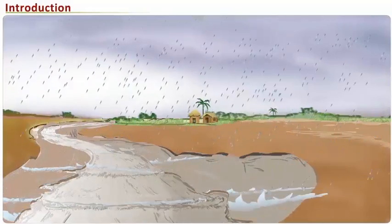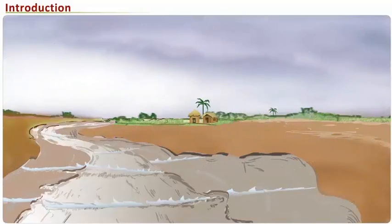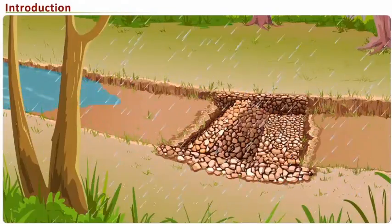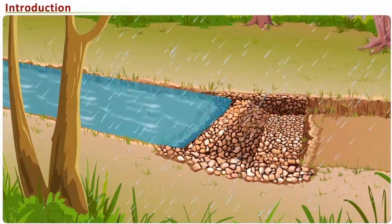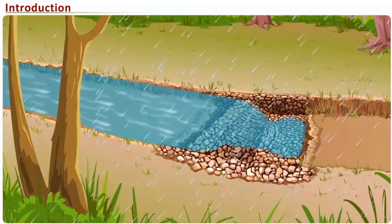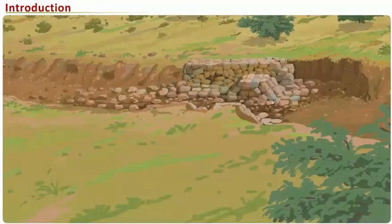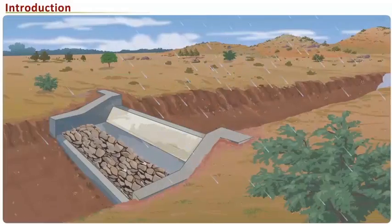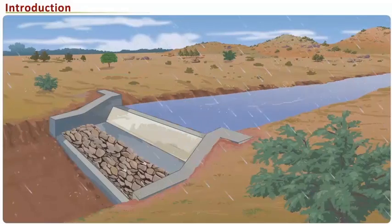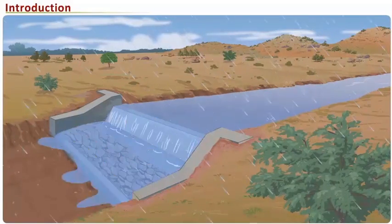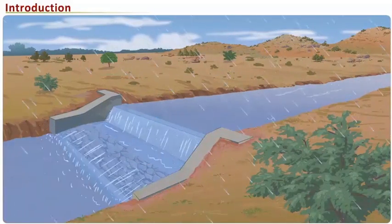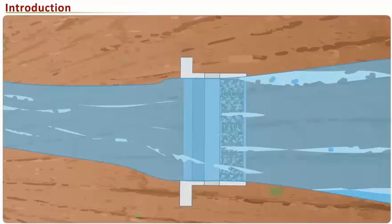Since these dams are constructed with stones, during heavy rains due to the velocity of the flow, the stones may slide off and the dam may get damaged. In such places, a structure is constructed across the streams to reduce the speed of runoff water as well as to prevent soil erosion, is called check wall.